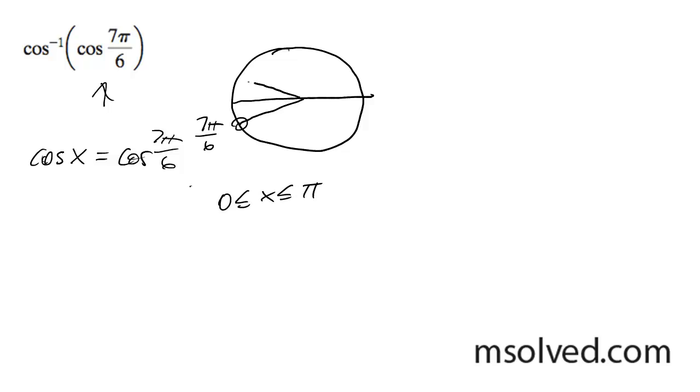So that means it has to be over here somewhere. So this is going to be simply 5 pi over 6, because this gap here is pi over 6.